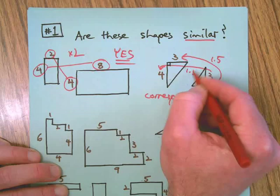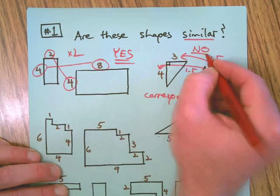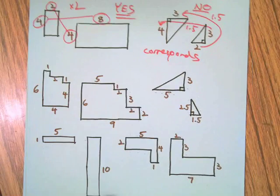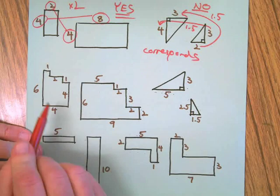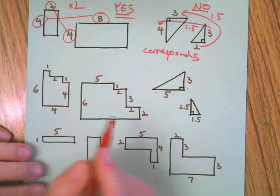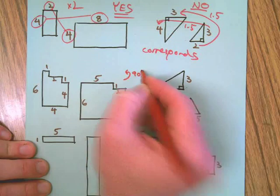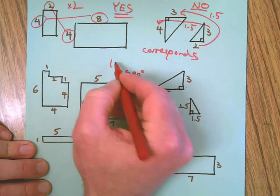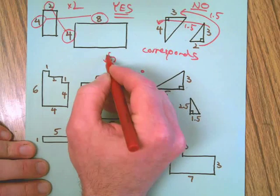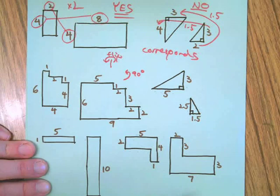On to the next one. Big complicated shape here. I can tell I would need to rotate 90 degrees and I would need to flip it. So once I do that I have corresponding sides.